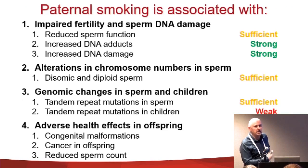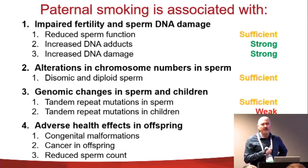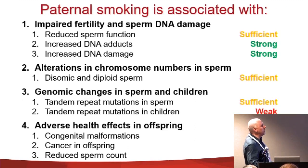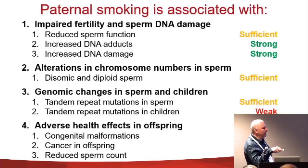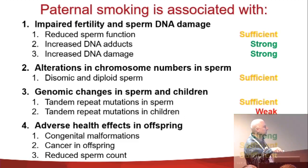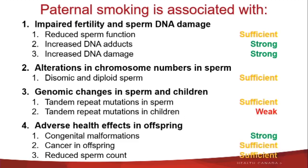Putting that together, this is my personal interpretation of the level of evidence we have for tobacco smoking inducing these types of effects. For impaired fertility and sperm damage, I think there is sufficient evidence that it reduces sperm function; strong evidence that it increases DNA adducts and DNA damage; sufficient evidence that it induces aneuploidy in sperm; sufficient evidence that it induces tandem repeat mutations in sperm — though evidence in children is weak as it's only one study. There is strong evidence for paternal tobacco smoking inducing congenital abnormalities, and sufficient evidence for cancer in the offspring and reduced sperm count in children of smokers.